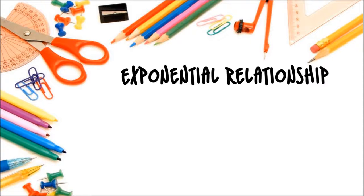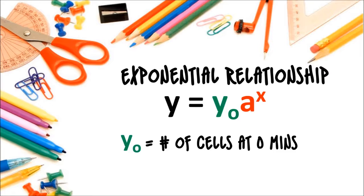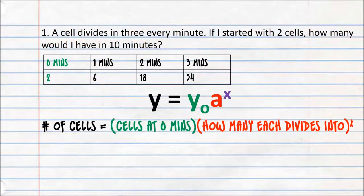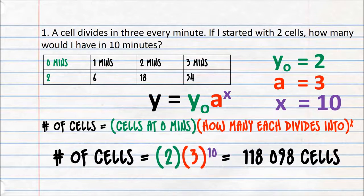This relationship has the general formula of y equals y₀ multiplied by a to the power of x. y₀ represents the number of cells we have at 0 minutes, and a represents the constant multiplying factor. Our y₀ value is 2, as we have 2 cells at 0 minutes. Our a value is 3, as each of the cells divide into 3. Our x value is 10, as we need the number of cells in 10 minutes. This gives us the answer of 118,098.